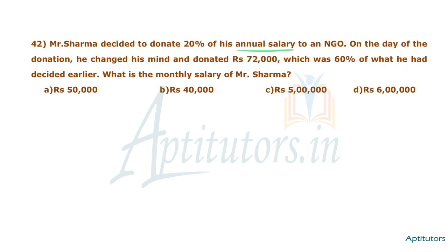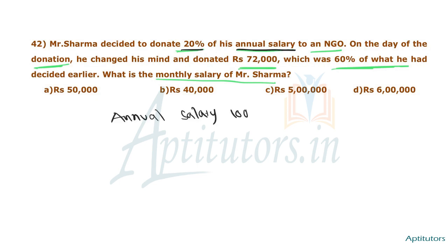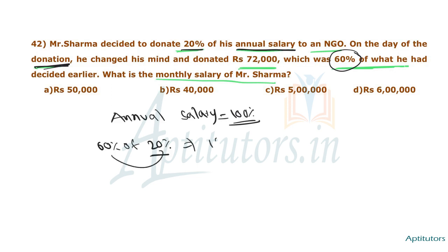Mr. Sharma's annual salary — he decided to donate 20% to an NGO. The amount he actually donated was 60% of the amount he had decided. So, 60% of 20% of his annual salary equals 12% of his annual salary. That means 12% of his annual salary was donated, and that amount is 72,000 rupees.